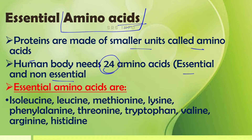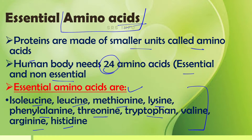The essential amino acids are: isoleucine, leucine, methionine, lysine, phenylalanine, threonine, tryptophan, valine, arginine, and histidine. You have to remember these names — these are the essential amino acids required in our body.